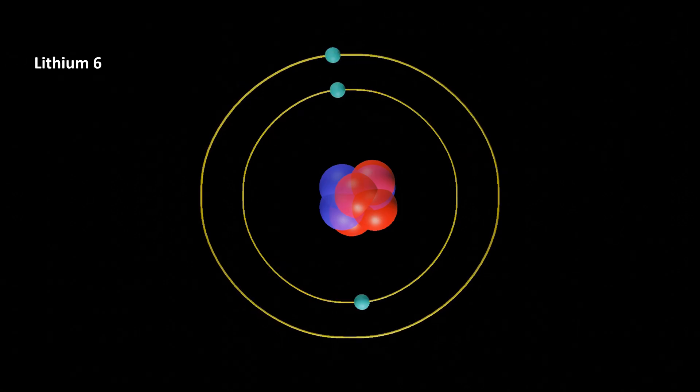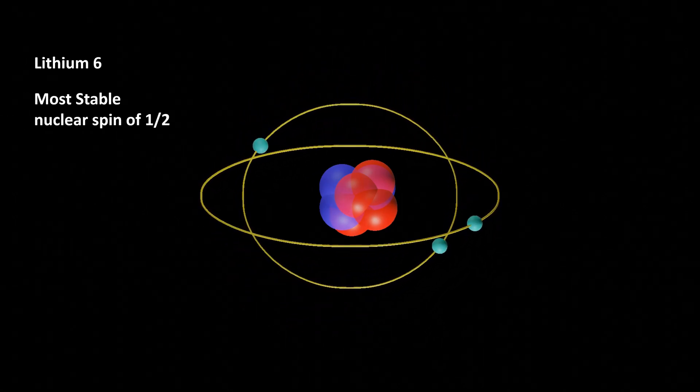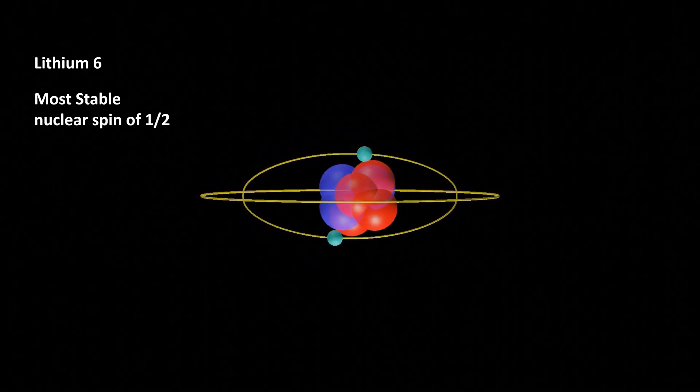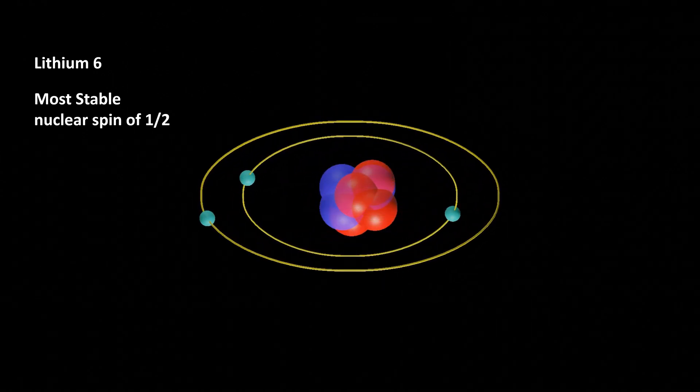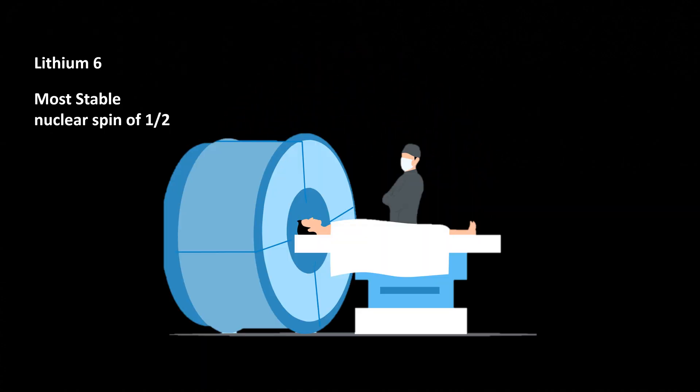Lithium has three isotopes: lithium-6, lithium-7, and lithium-8. Lithium-6 is the most stable isotope and makes up about 7.5% of naturally occurring lithium. It has a nuclear spin of one half and is used in nuclear magnetic resonance imaging (MRI).